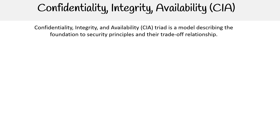Hey, it's Andrew Brown from Exam Pro. And we're looking at the CIA triad — that stands for confidentiality, integrity, and availability. This model is used for describing the foundation of security principles, and their trade-offs and relationships.